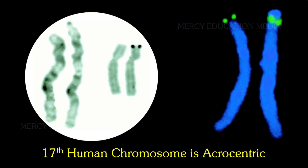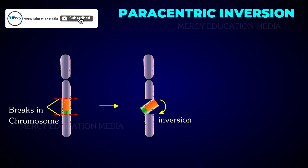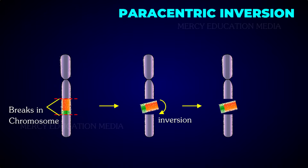The 17th human chromosome is acrocentric, while in chimpanzee the corresponding chromosome is metacentric. In paracentric inversion, the inverted segment of a chromosome has no centromeres.